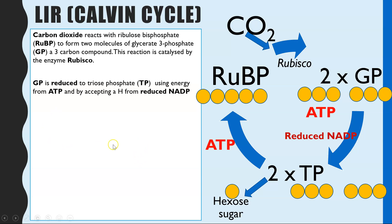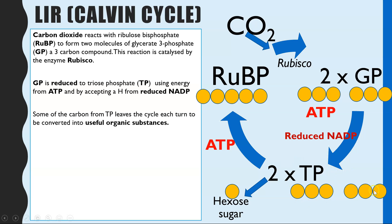The next part of the cycle involves the two molecules of TP. One carbon atom is removed from the cycle each time the cycle happens, and once the cycle has occurred six times, six carbons will have been removed — that is when a hexose sugar can be fully created. Some of the carbon from TP leaves the cycle each turn and is used to make useful organic substances. AQA specifies 'organic substances,' meaning substances which contain carbon.